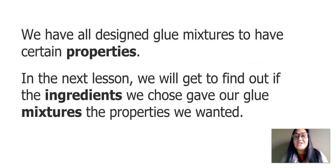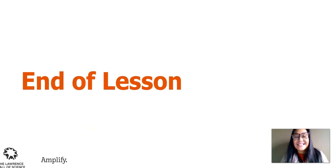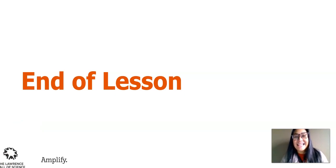We have all designed glue mixtures to have certain properties. In the next lesson, we will find out if the ingredients we chose gave our glue mixtures the properties we wanted — strong, sticky, and thick. That is the end of today's lesson. We completed our substance table, wrote a design argument, came up with a glue recipe, and made a prediction on how strong our glue might be. I hope you had fun and learned a lot. See you next time!